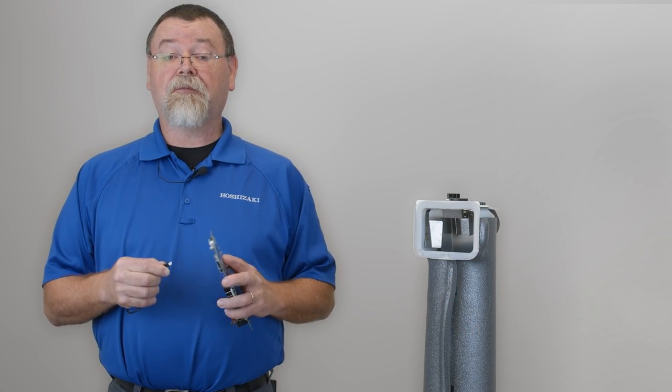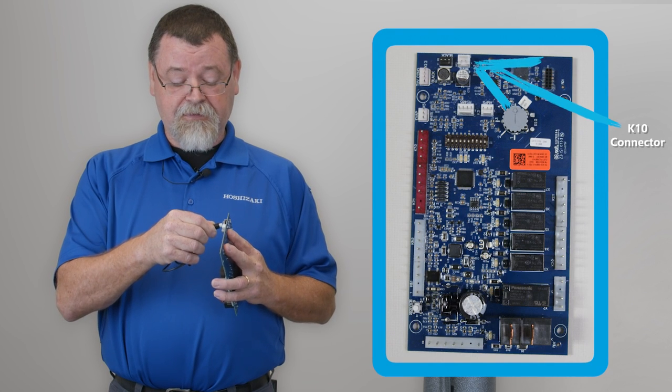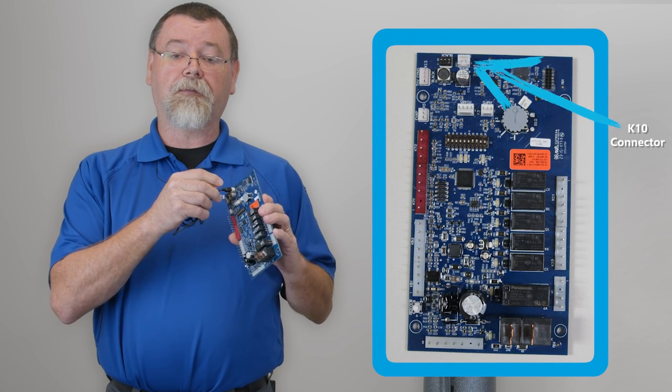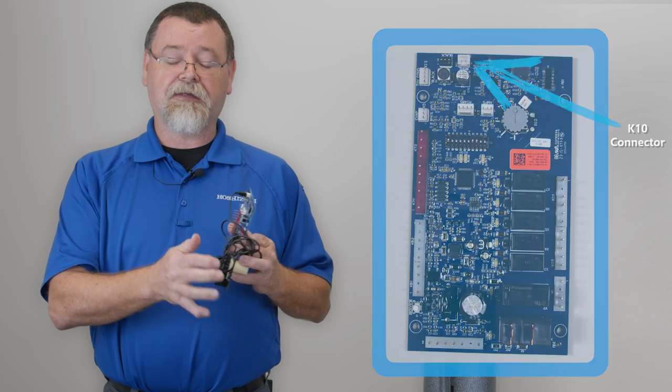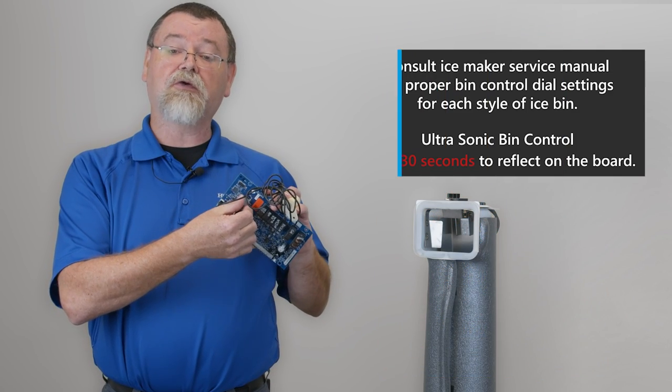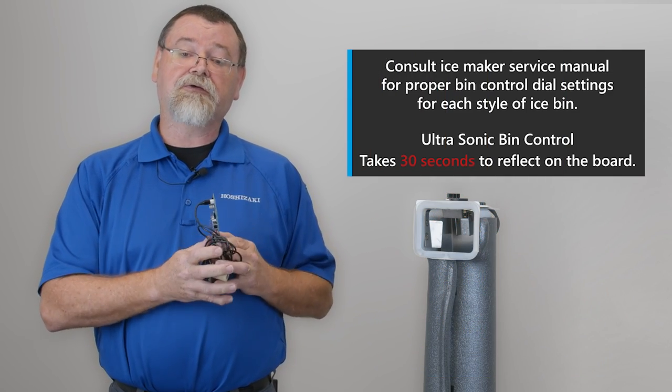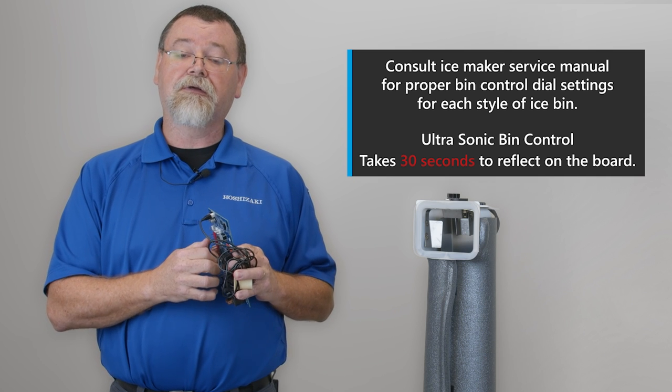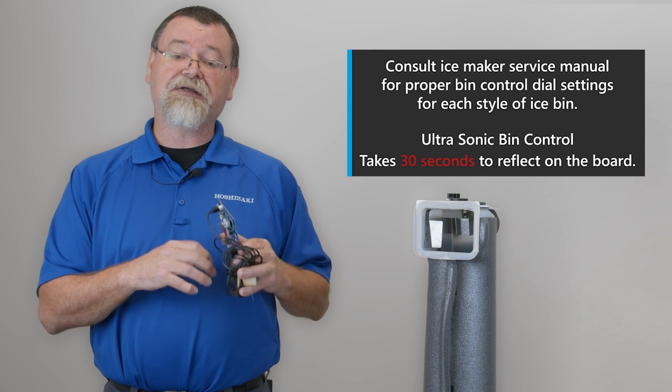So the ultrasonic bin control in modular Flakers plugs into the K10 board connector on the control board. And as we mentioned earlier, the depth of the ice can be set by using this dial. You'll need to consult your instruction manual or your service manual as far as what depth the ice needs to be set compared to what ice storage bin it's sitting on.